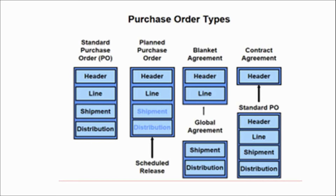In a contract purchase order, only the header is known. The header means we know the supplier, the supplier site, and the agreed amount. We don't know the item, the quantity, or the delivery schedule — nothing else is known. Whenever we need that kind of item, we will take the help of a standard purchase order.